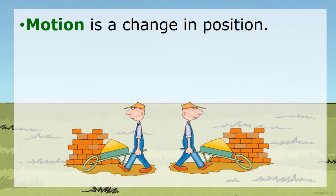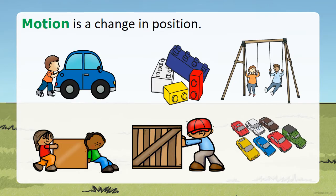Motion is a change in position. You go from right, then you go back to left. Here we see the car being pushed — that's a change in position. The Lego blocks can be pushed or pulled, producing a change in position. The swing goes from high back to low — a change in position. Moving a large box by pushing and pulling it is a change in position, as is pushing a big crate. Vehicles moving from one place to another — a change in position. That is motion.